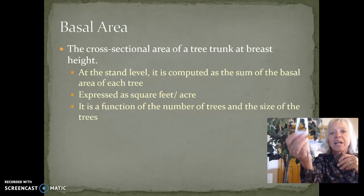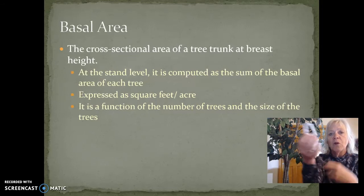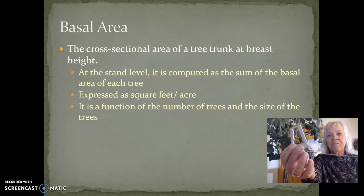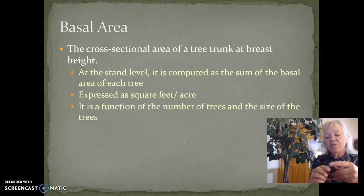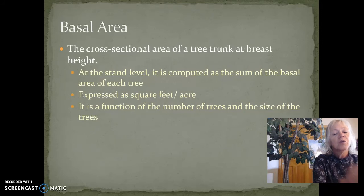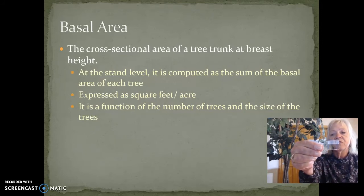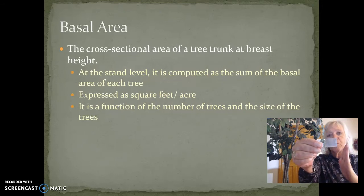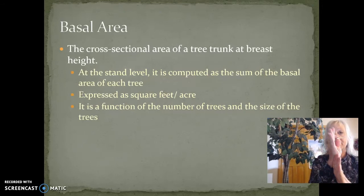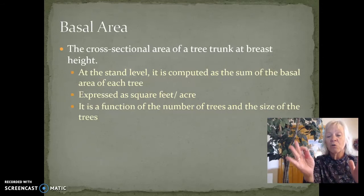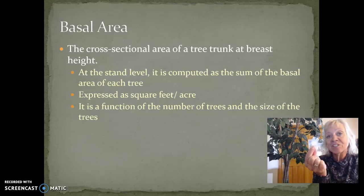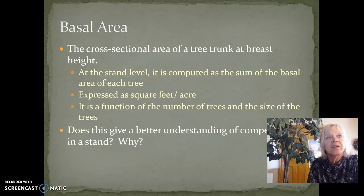This is the angle gauge, and we can hold that up and figure out how wide the tree is without making a plot. We also use a prism — that is just a way to fracture the top from the bottom of the tree. If the two points meet, it's in; if the two points don't meet, it's out. Using a basal area factor on an angle gauge or a prism, you can calculate the basal area of a forest.